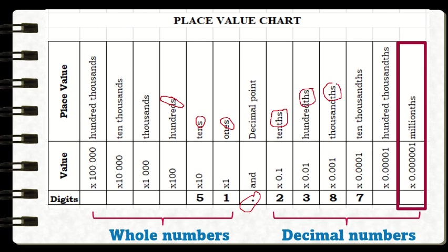Take note that when we write the place value of a whole number, it will end with 's', and for decimal numbers it ends with 'ths'. Now let's try to answer this example: in 51 and 2,387 ten-thousandths, determine the place value and the value of the following digits.